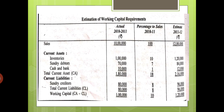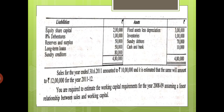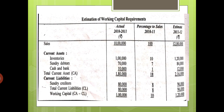First, we will list out the current assets from the balance sheet: inventories, sundry debtors, cash and bank. We will list the actual amounts and in the percentage column show each item as a percentage of sales. For example, inventory is 1 lakh and sales is 10 lakhs, so the percentage is 1 lakh divided by 10 lakhs times 100, which equals 10%. Then 70,000 divided by 10 lakhs is 7%, and 10,000 divided by 10 lakhs is 1%. We find the percentage of each current asset relative to sales for the first year.